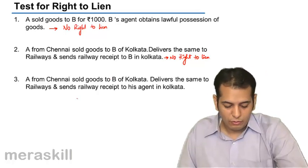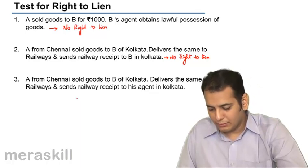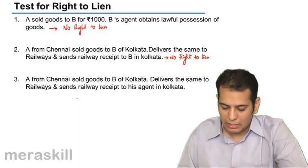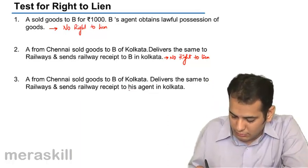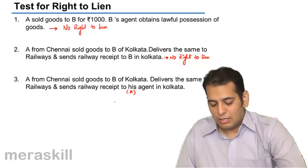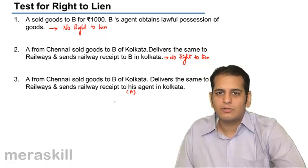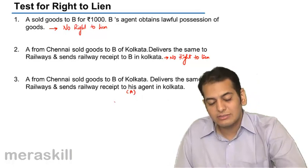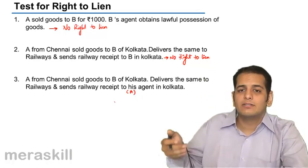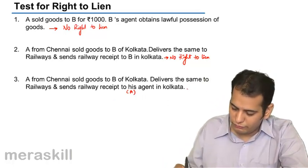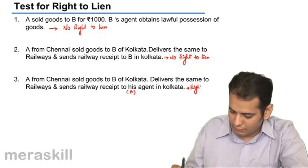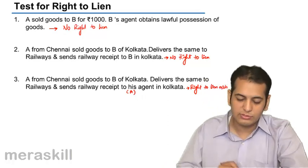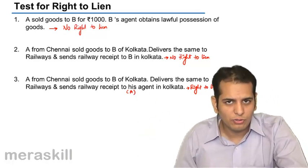Next case: A of Chennai sold goods to B of Kolkata. He delivers the same to the railways and sends the railway receipt to his own agent in Kolkata — meaning A's agent. If this had been B's agent, the document of title would be treated as being with B, so no right to lien would exist. But because this is A's agent, the document of title is still with A. So right to lien exists in this case, as the documents have not yet gone to B or his agent.